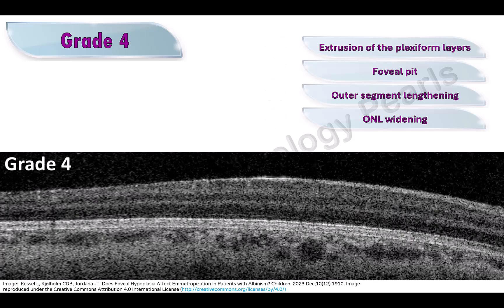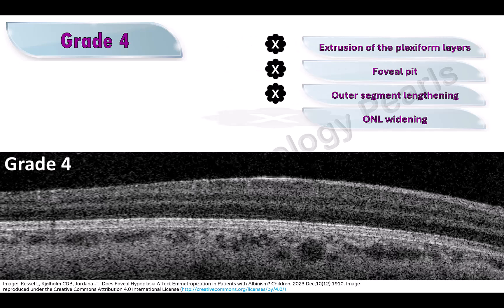In grade 4 foveal hypoplasia, in addition to the features of grade 3, outer nuclear layer widening is also absent.